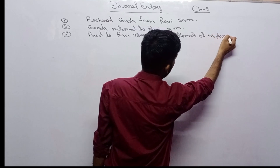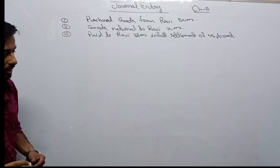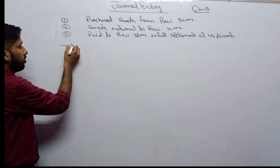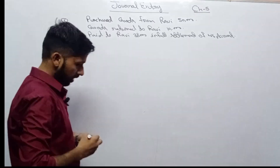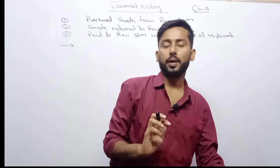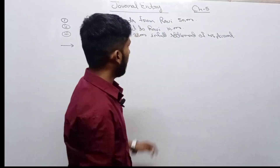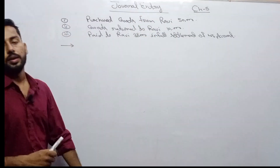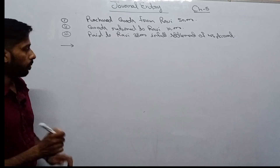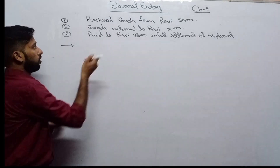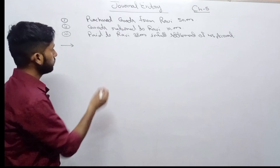Now let's see how to make the journal entries. Many students get confused here, but you don't need to be. Look carefully. First entry: purchase from Ravi. You should know what this means — we are buying goods from Ravi. What will the entry be?